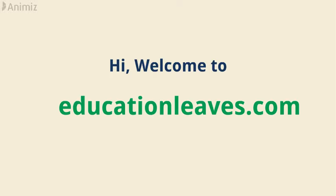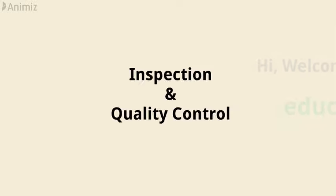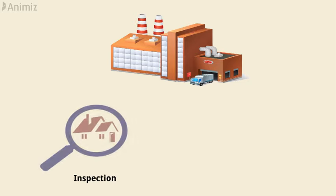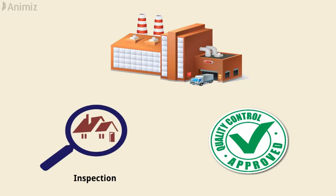Welcome to EducationLeaves.com. In this video, we are going to learn about inspection and quality control in manufacturing. In a manufacturing plant, inspection and quality control are the most important processes in order to make a high-quality product.